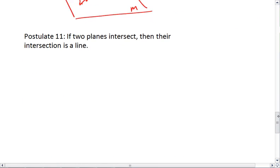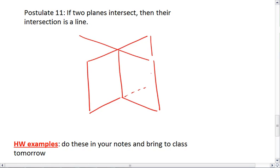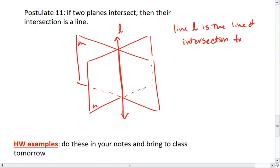And finally, our last new postulate. If two planes intersect, let's think about how we can draw this. Okay, we have two intersecting planes, plane M and plane N. Where they intersect is exactly one line. Line L is the line of intersection for planes M and N.